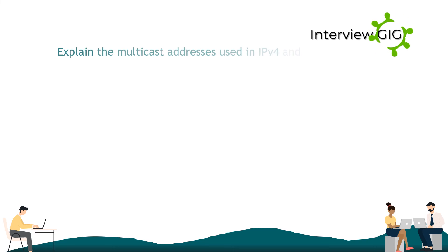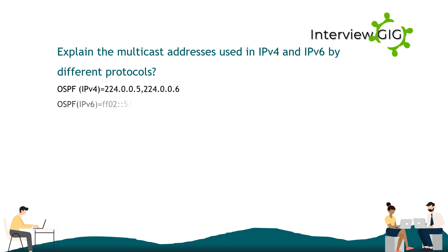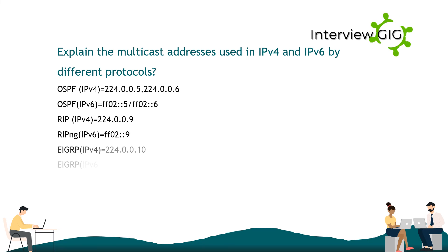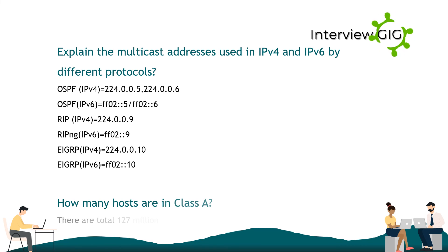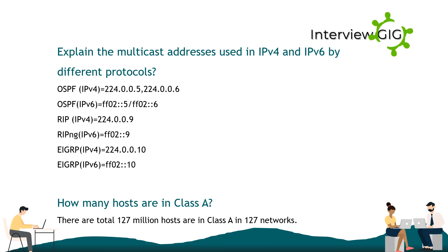Explain the multicast addresses used in IPv4 and IPv6 by different protocols. OSPF IPv4: 224.0.0.5 / 224.0.0.6. OSPF IPv6: FF02::5 / FF02::6. RIP IPv4: 224.0.0.9. RIPng IPv6: FF02::9. EIGRP IPv4: 224.0.0.10. EIGRP IPv6: FF02::10.